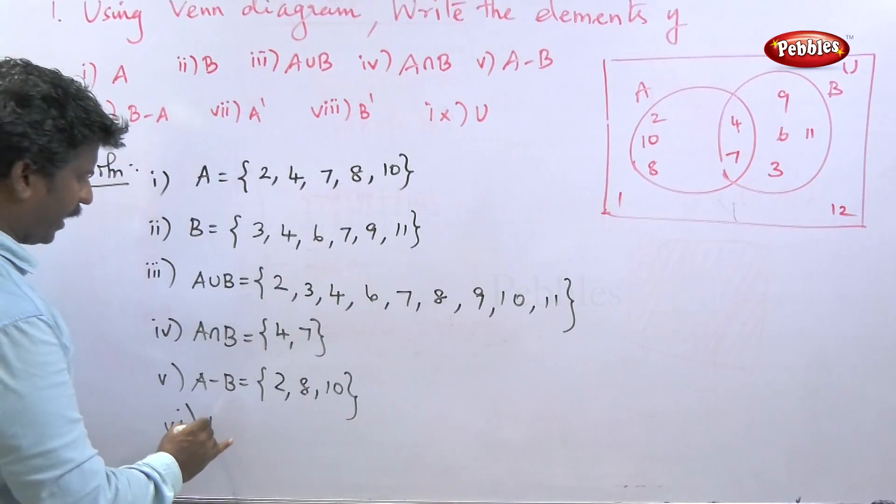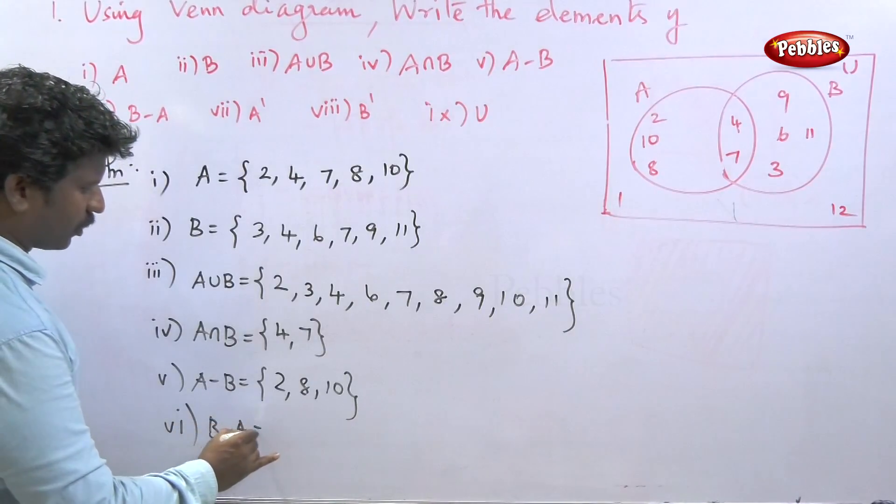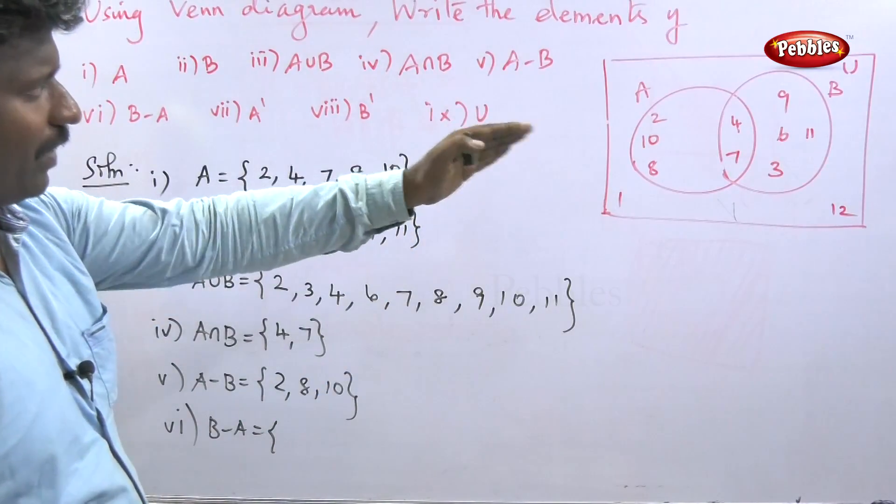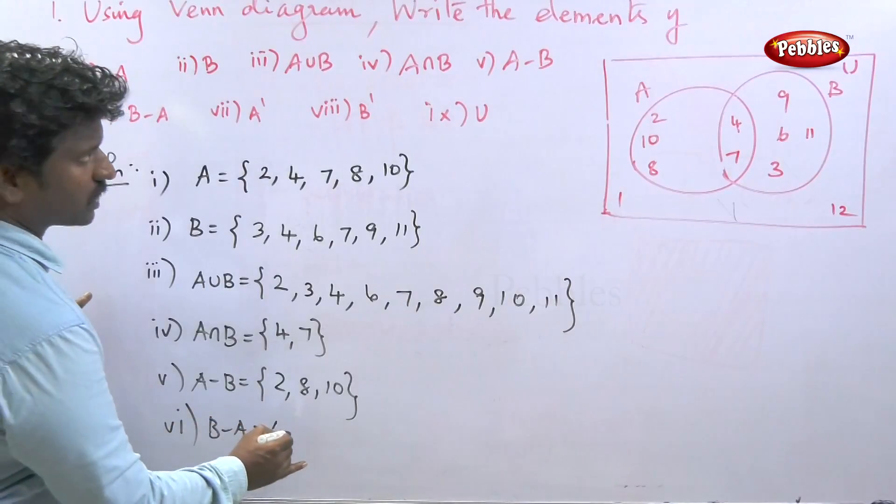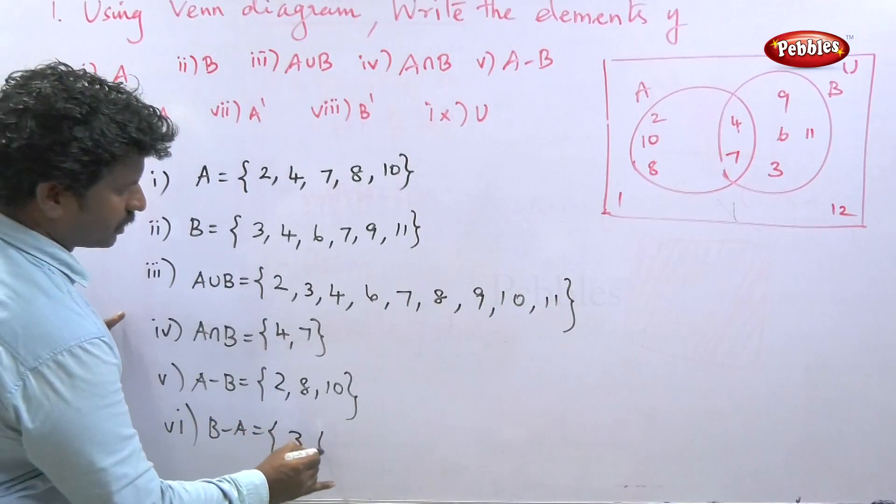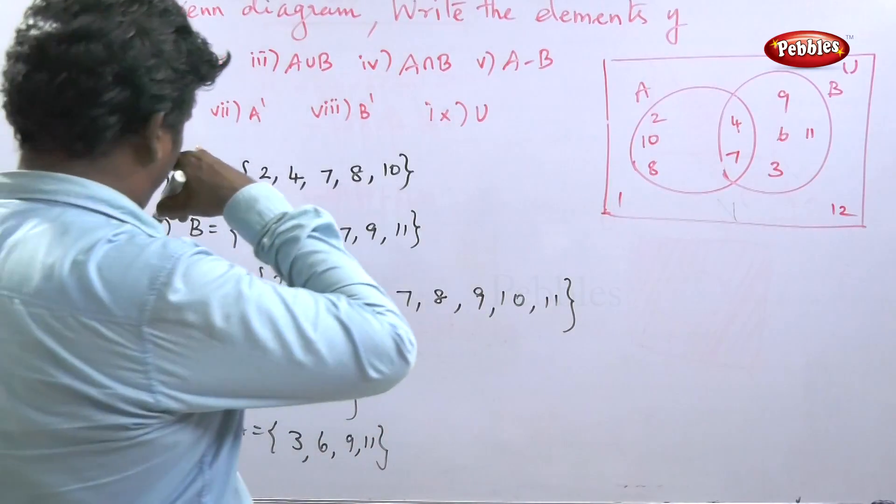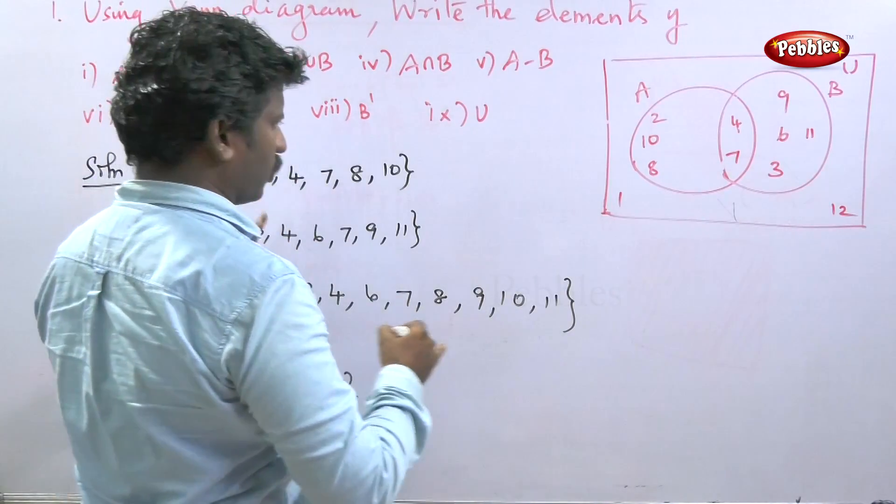B minus A. Elements in B but not in A. The remaining B elements are 3, 6, 9, 11. This is B minus A.